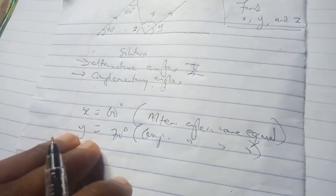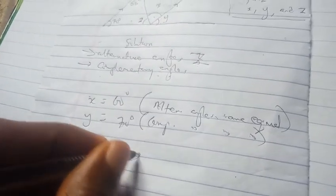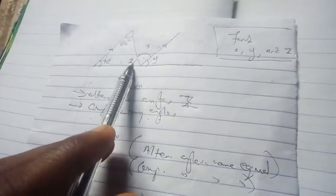Then next, Z. Sum of angles on a straight line - notice, we have many angles - sum of angles on a straight line is 180 degrees. So in this case, since these angles are on the straight line: Z plus X plus Y is equal to 180.